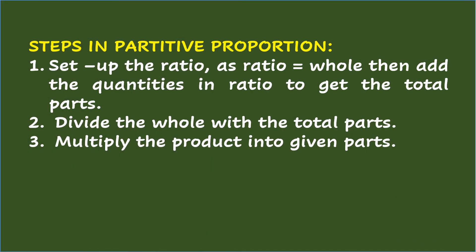Steps in Partitive Proportion: 1 — set up the ratio as ratio equals whole, then add the quantities in ratio to get the total parts. 2 — divide the whole by the total parts. 3 — multiply the result by the given parts.